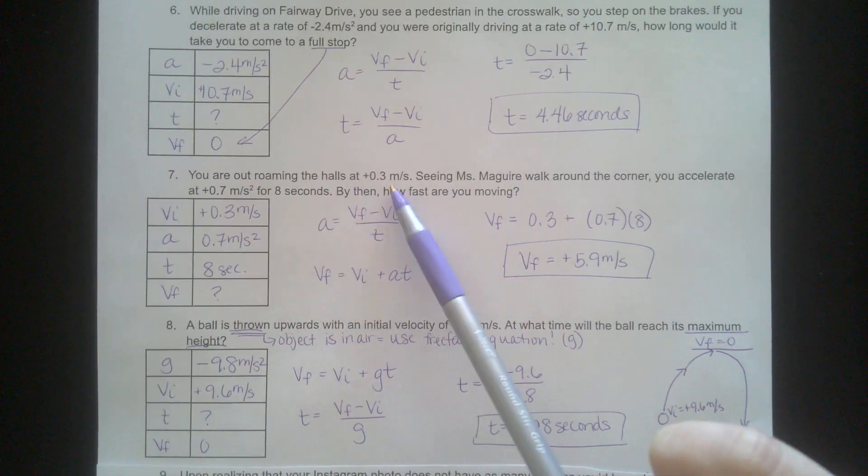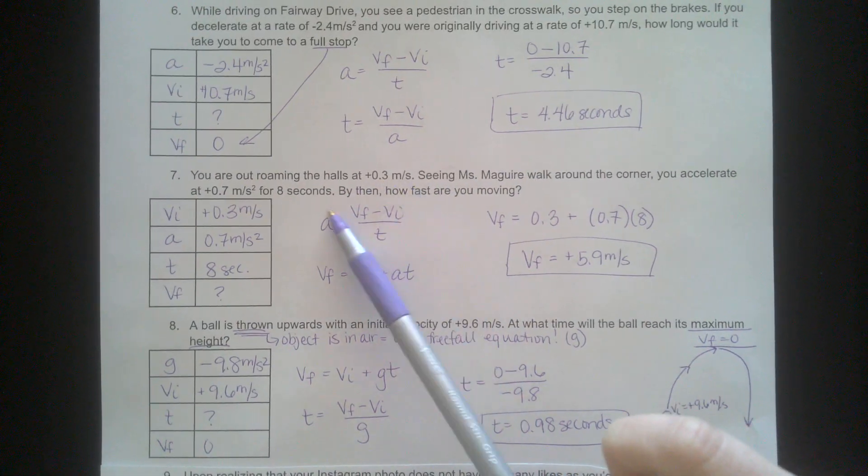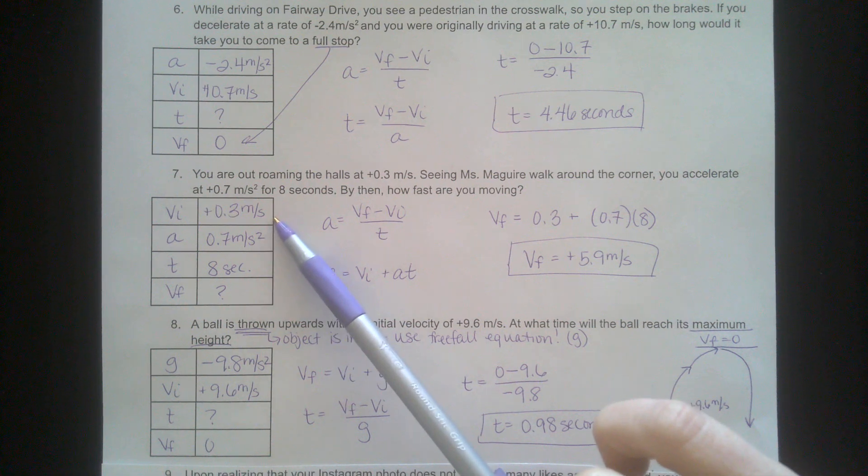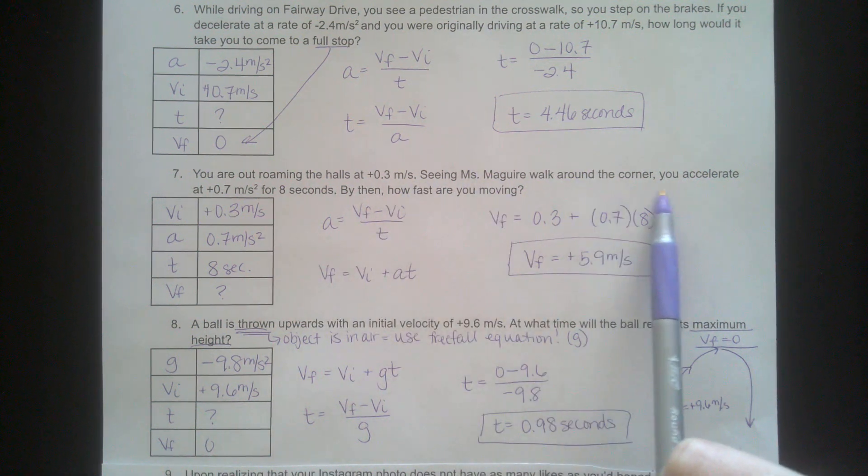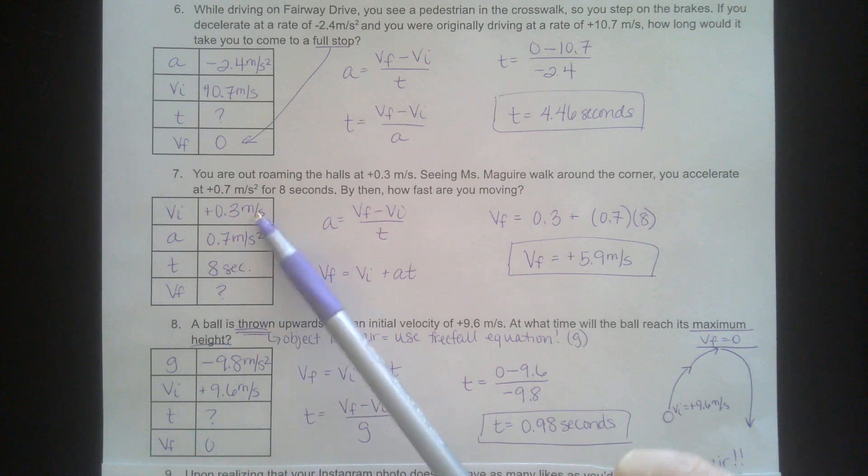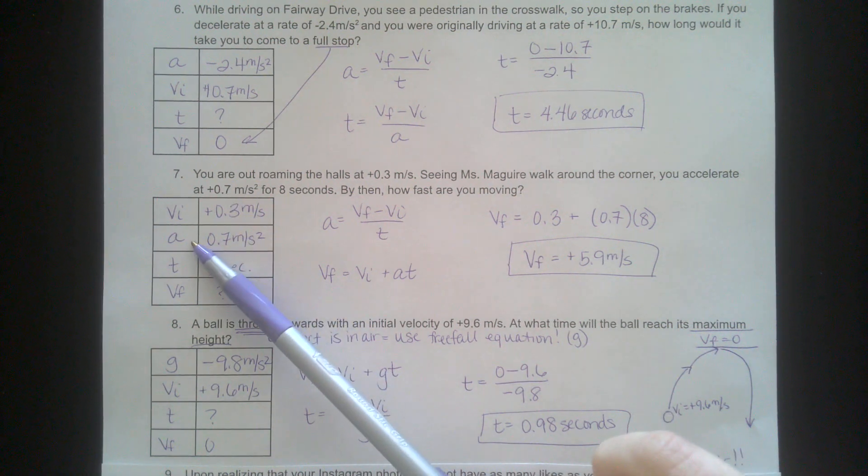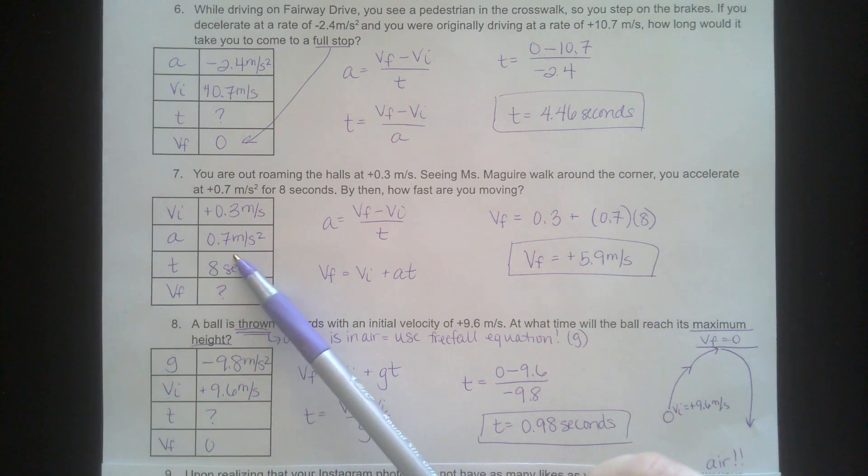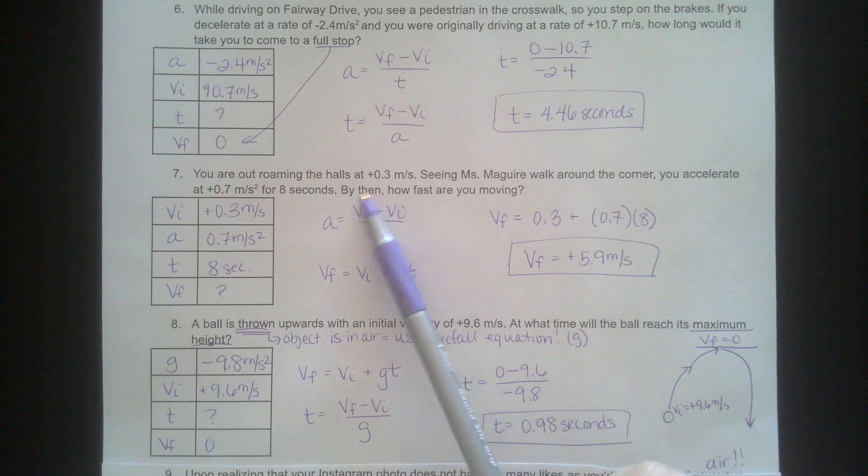Number seven, you're out roaming the halls at 0.3 meters per second, there's your VI. Ms. McGuire comes around the corner, so you need to accelerate. You accelerate at 0.7 meters per second squared. That squared means this is an A. For eight seconds is a time. By then, so that signifies afterwards, after you've already accelerated. So we're looking for VF. How fast are you moving?